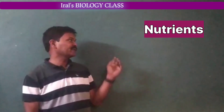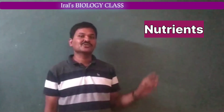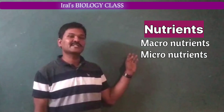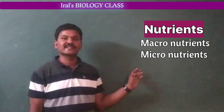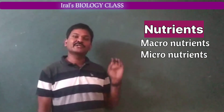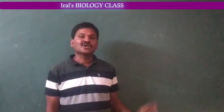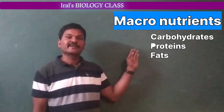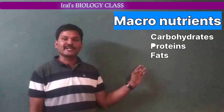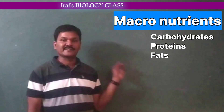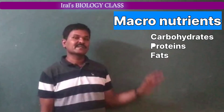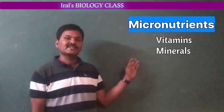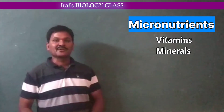There are two types of nutrients we can observe here. Those are macronutrients and micronutrients. Macronutrients are carbohydrates, proteins and fats. Then micronutrients are vitamins and minerals.